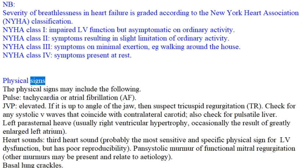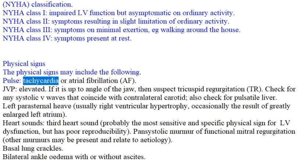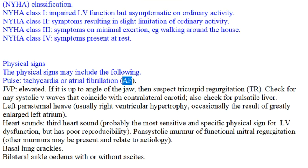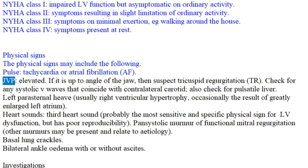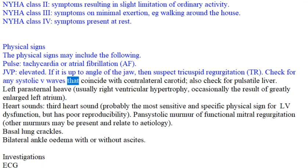Physical signs may include: pulse showing tachycardia or atrial fibrillation (AF); elevated JVP — if elevated up to the angle of the jaw, suspect tricuspid regurgitation (TR). Check for systolic v waves coinciding with the contralateral carotid pulse, and also check for a pulsatile liver.